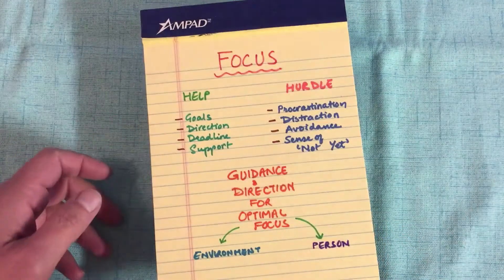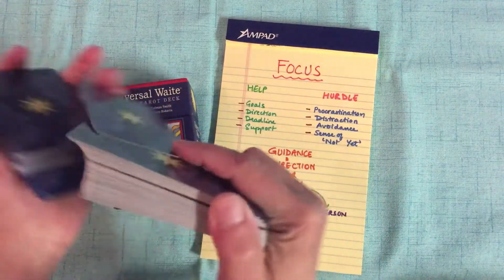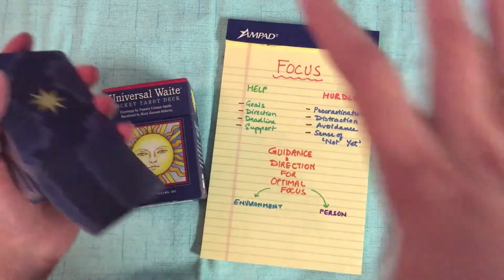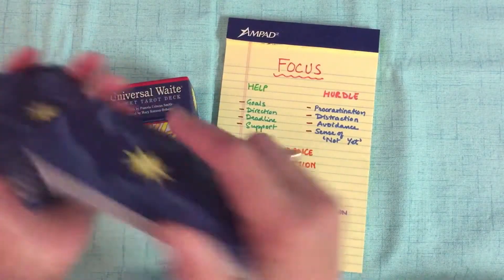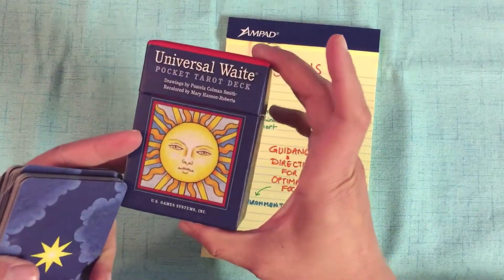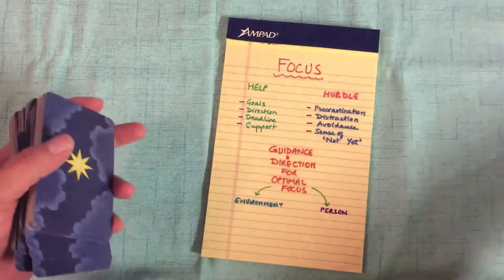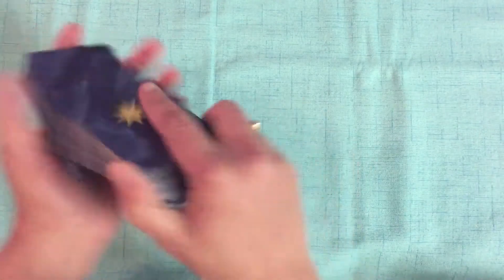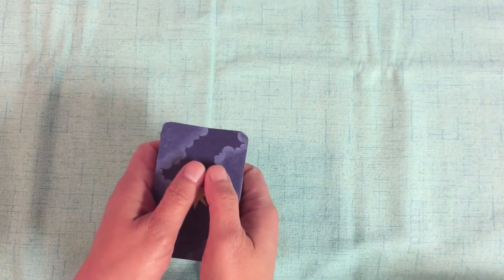Since this spread has a lot of positions, I'm using my cute little pocket tarot deck — the Universal Waite pocket version — so the cards are a little smaller but fit better on the spread cloth. I've mixed and shuffled the cards, and now I'm going to focus for a bit and ask the cards to guide me and tell me all about focus.